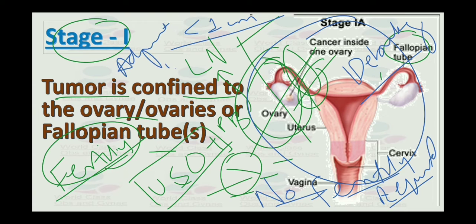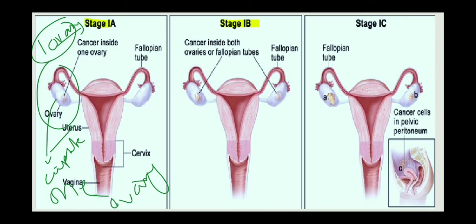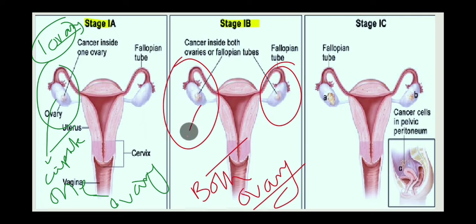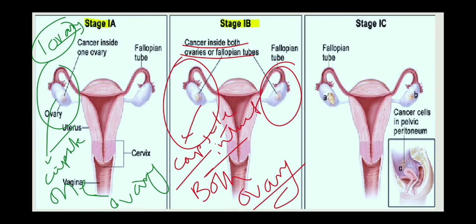In stage 1b, both ovaries or fallopian tubes are affected by the tumor, but the tumor capsule is intact. Tumor is not detected on the surface; it is inside the capsule. Malignant cells are not detected in ascites or peritoneal washing. Management is primary debulking plus adjuvant chemotherapy in grade three.